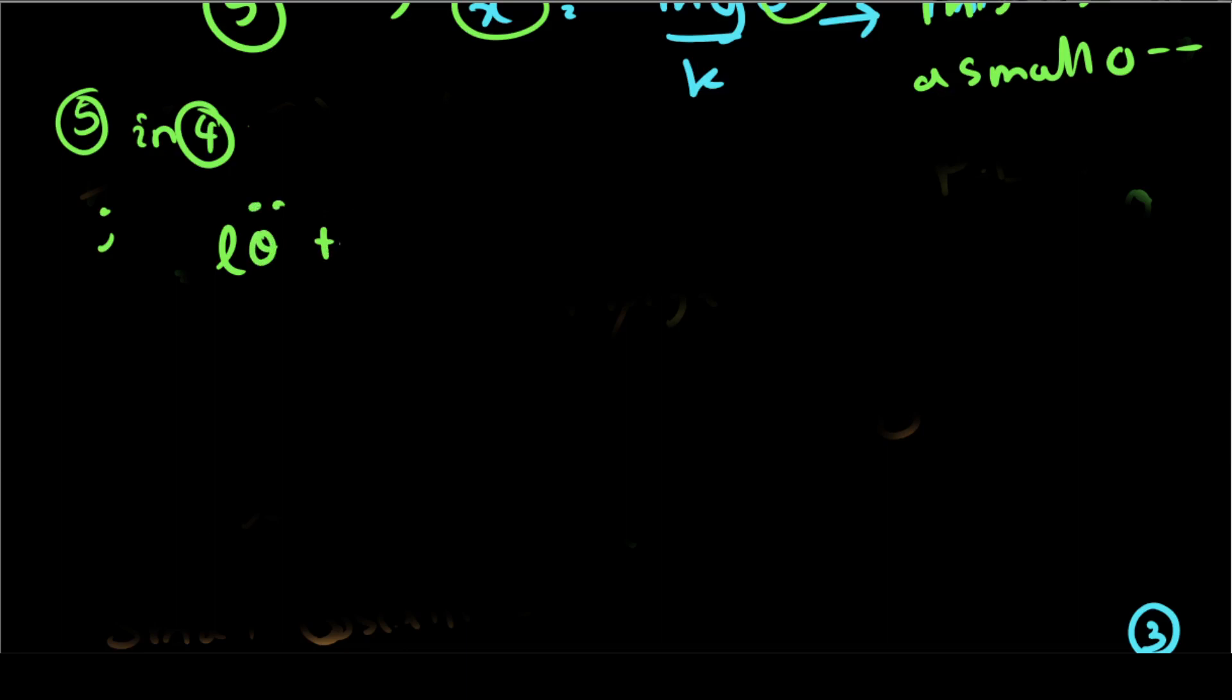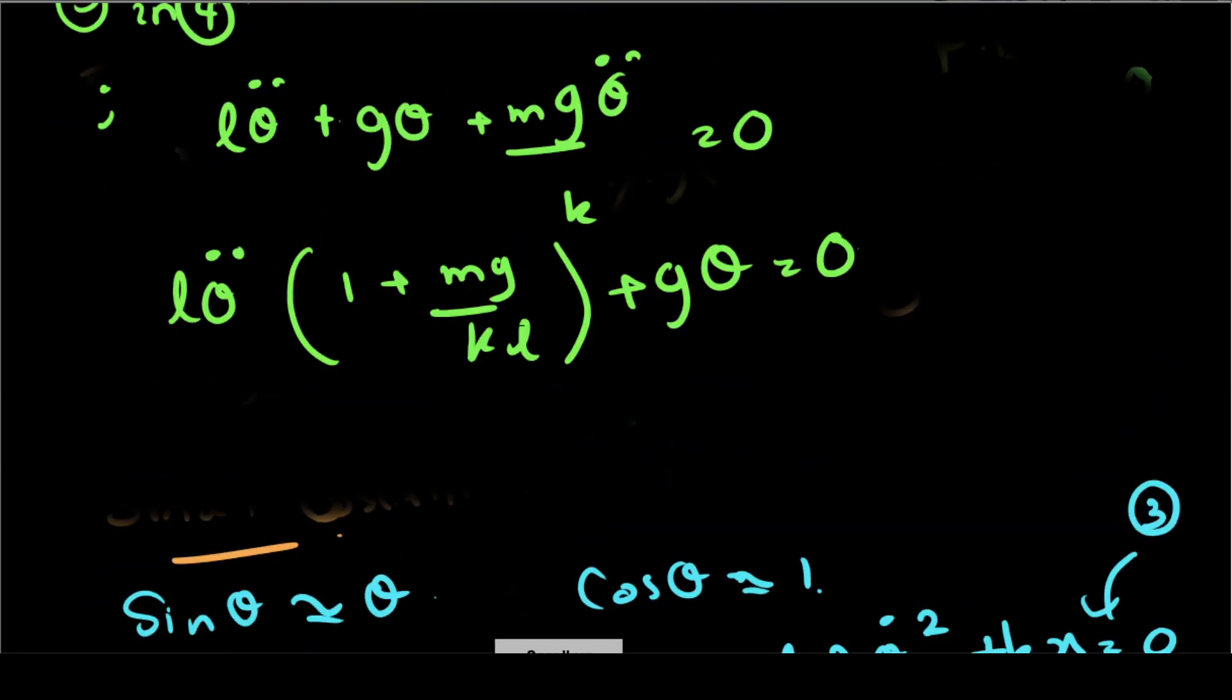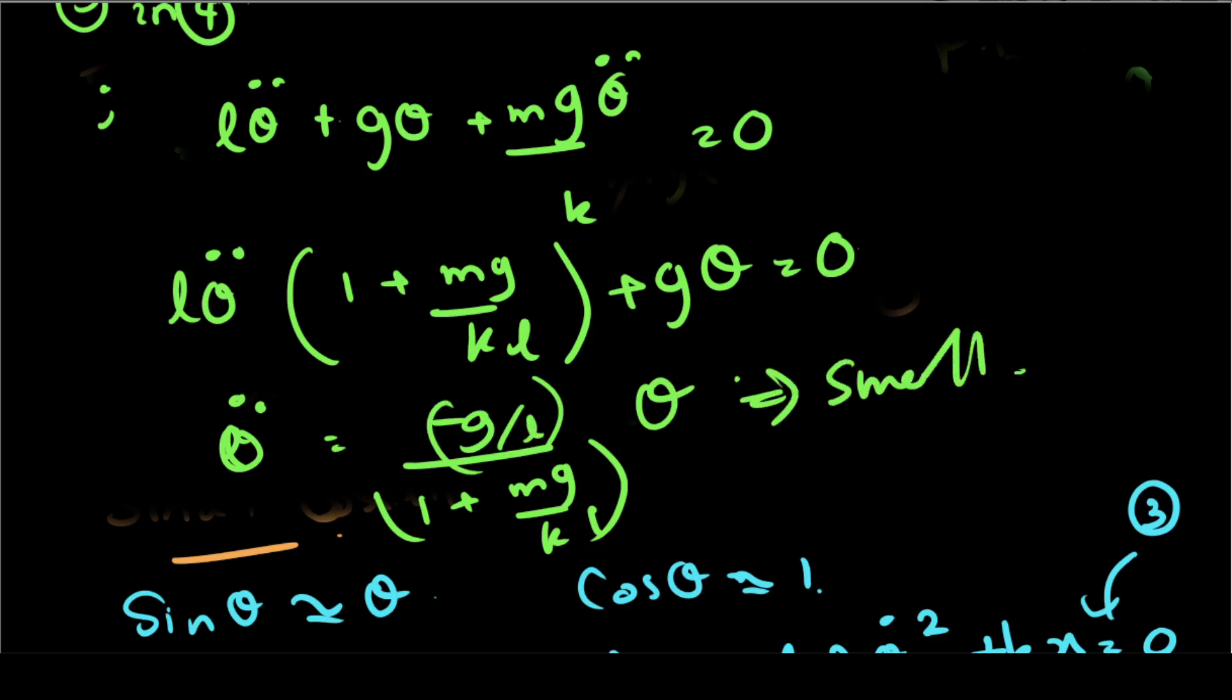Theta double dot plus g over L theta. Small oscillation, done.